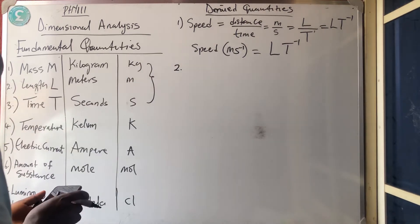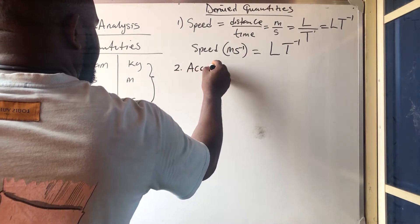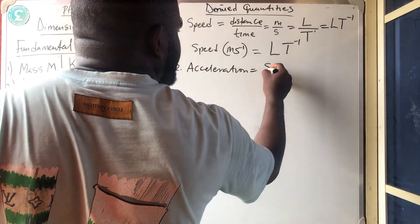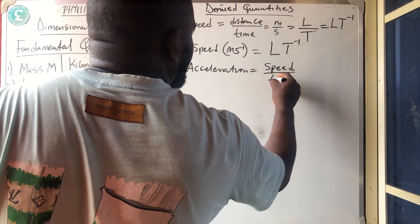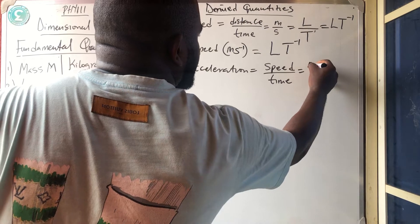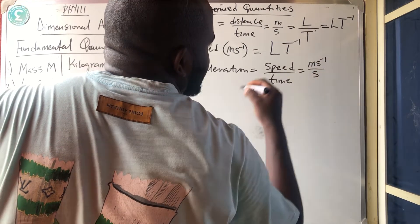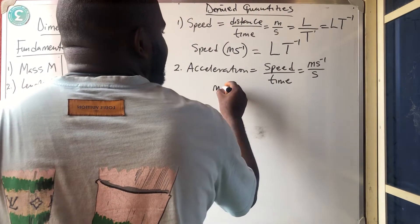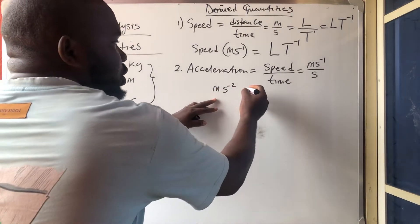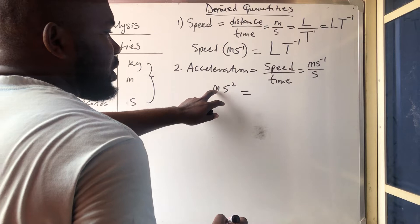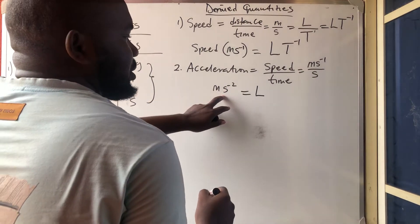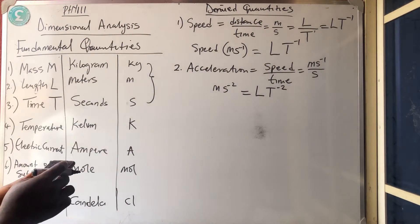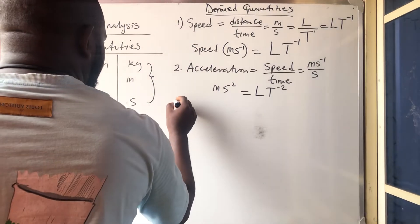Number 2 is acceleration. Acceleration equals speed over time. The SI unit of speed is meter per second, all over another second — so you get meter per second squared. What gave us meter is length (L), and because of the minus 2, you put T minus 2. So the dimension of acceleration is LT⁻².